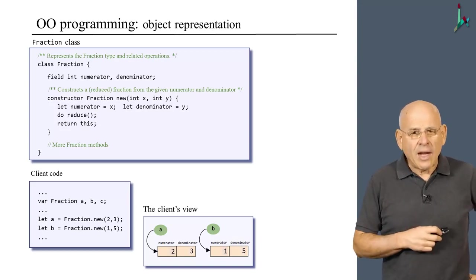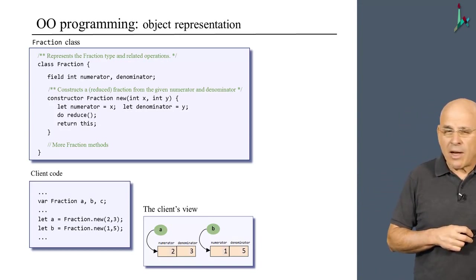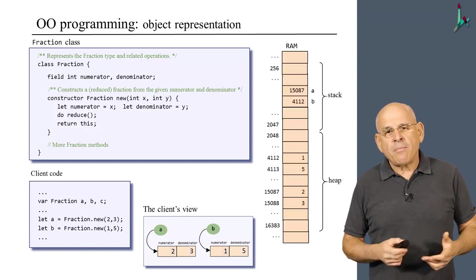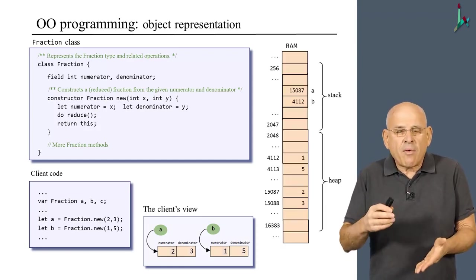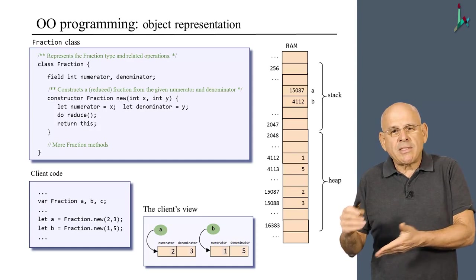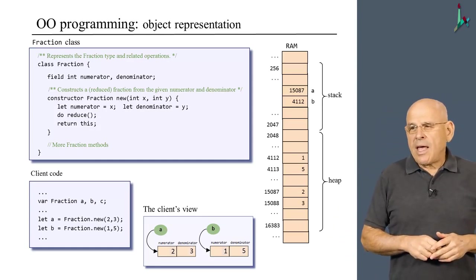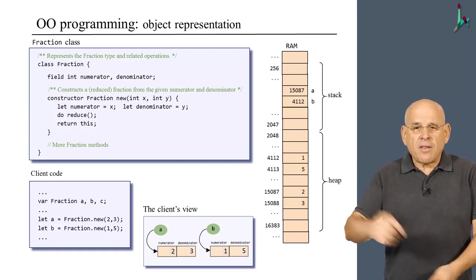All right, so I repeat here the constructor code that we saw earlier. Nothing new here. And some client code that uses the constructor by calling it twice. And programmers tend to think about objects using this visual representation here. So we see that each fraction is represented by a block that includes all the field values of the current object. And we also have a reference to each of these blocks, which is the name of the variable that we created in order to represent these fractions.